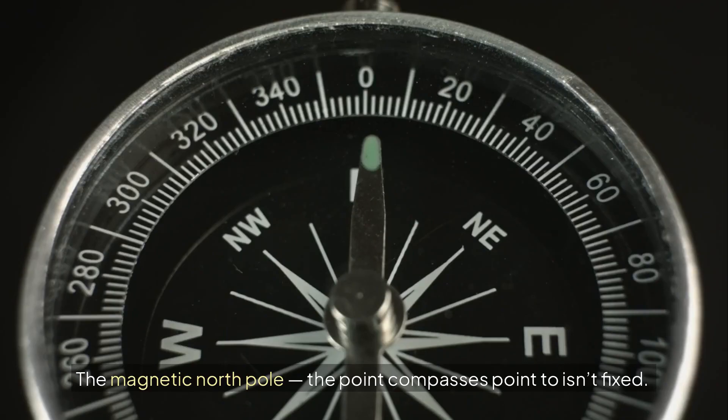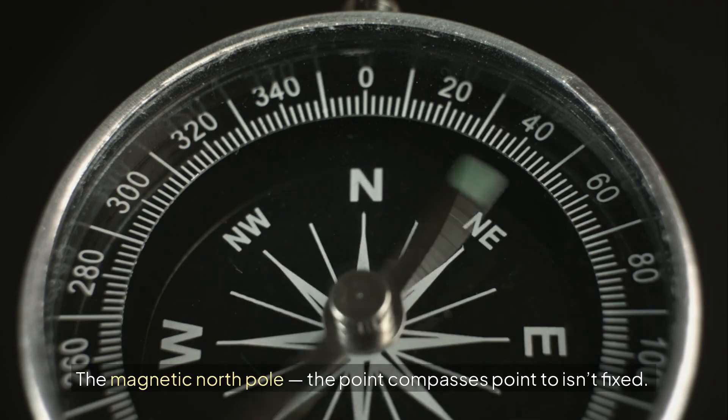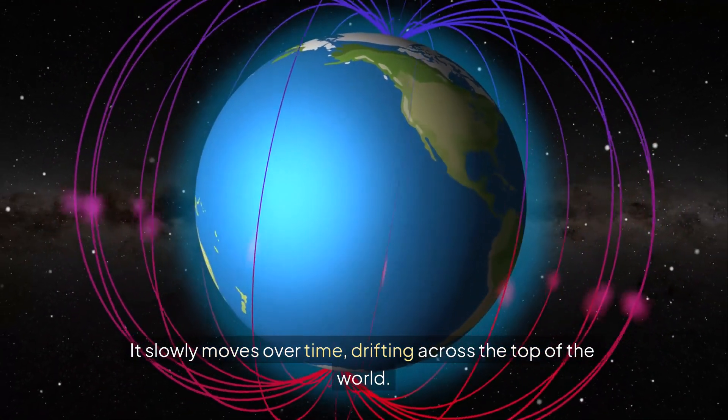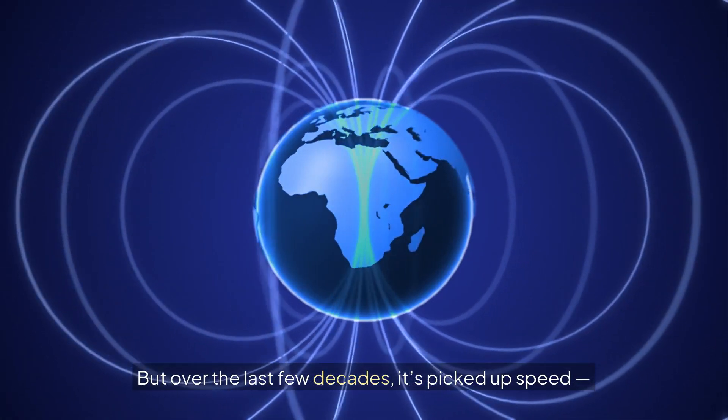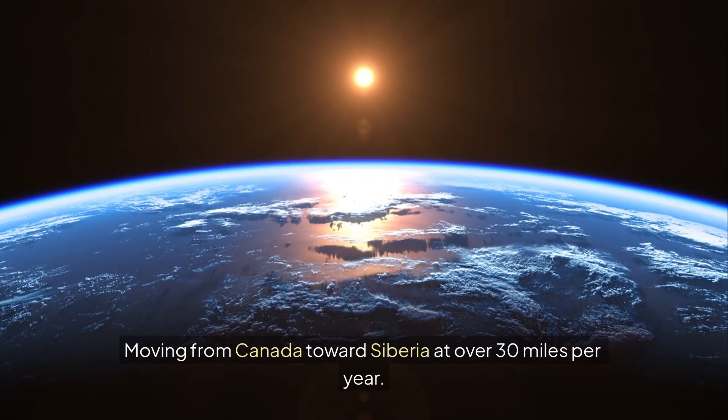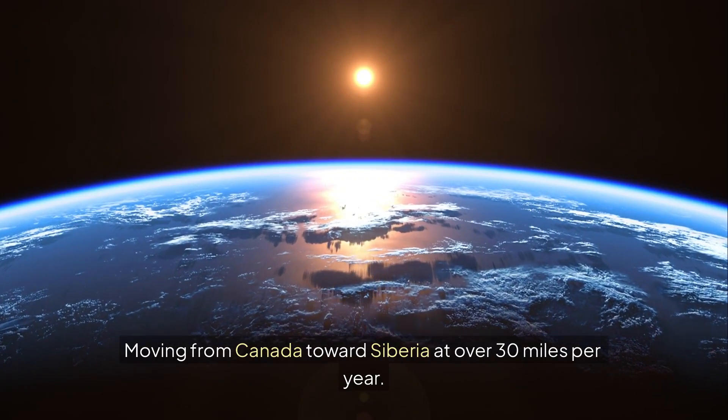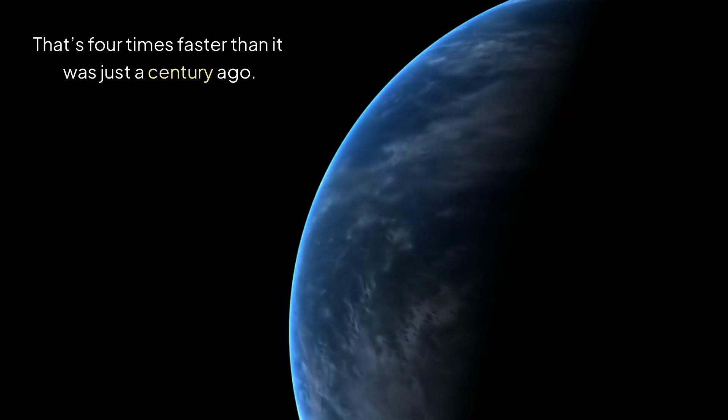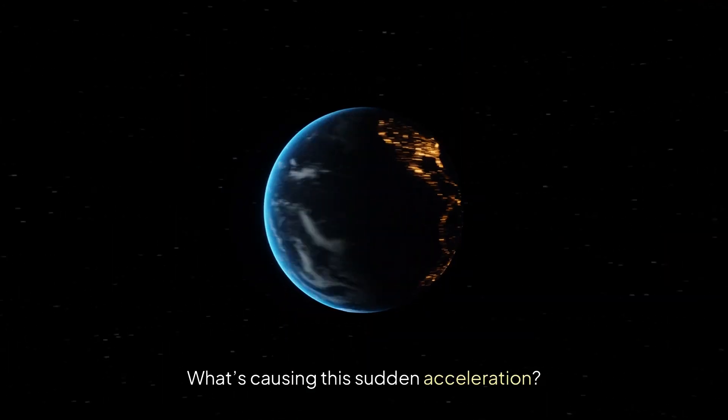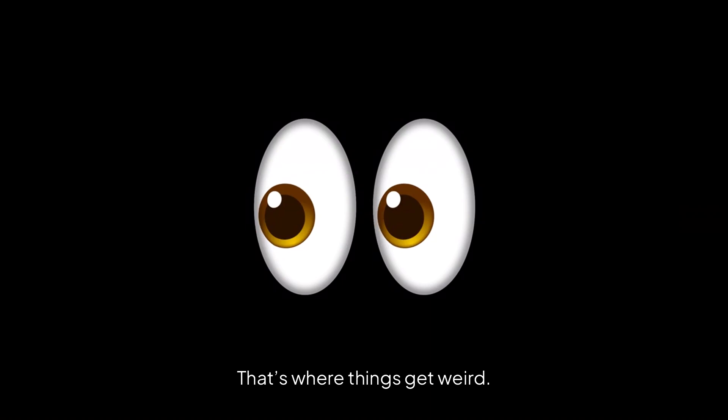The magnetic north pole, the point compasses point to, isn't fixed. It slowly moves over time, drifting across the top of the world. But over the last few decades, it's picked up speed, moving from Canada toward Siberia at over 30 miles per year. That's four times faster than it was just a century ago. So, what's causing this sudden acceleration?